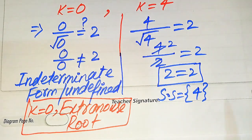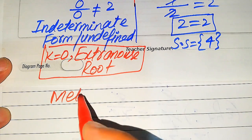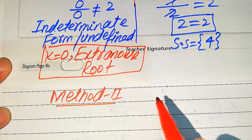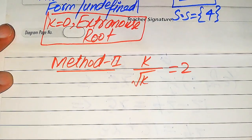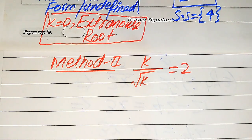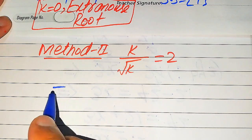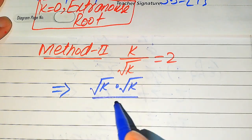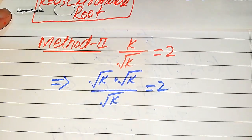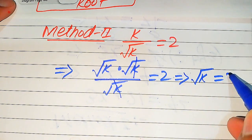This is the final answer from Method 1. Now we solve this problem using a second method. We copy down the given equation: k divided by square root of k equals 2. In the second method, I give you a smarter technique. We rewrite k as square root of k multiplied by square root of k, so the expression becomes square root of k times square root of k, divided by square root of k, equals 2. The square root of k in the numerator and denominator cancel, leaving square root of k equals 2.